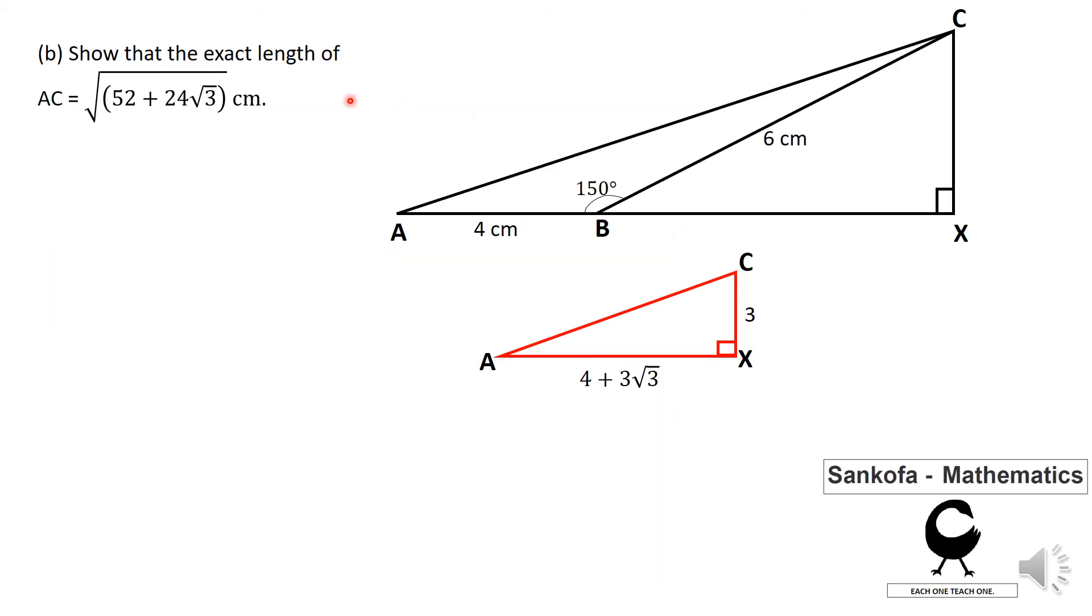Then there is a B part to the question. You're supposed to show here that the exact length of AC is equal to the square root of 52 plus 24 root 3. Right. So I've brought in the triangle here from the previous diagram. So this is the distance we are supposed to calculate. And if you can spot it, you should realize that this has to deal with the theory of Pythagoras, where AC squared is equal to AX squared plus XC squared. So just punching those values there. But you need to be a little bit careful when you do your expansion here. So eventually you should get 16 plus 24 root 3 plus 27. Now the 27, it's very important that you understand where it comes from.